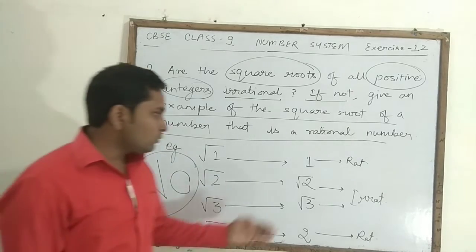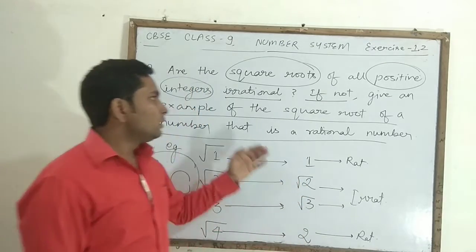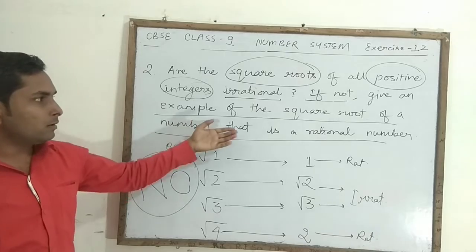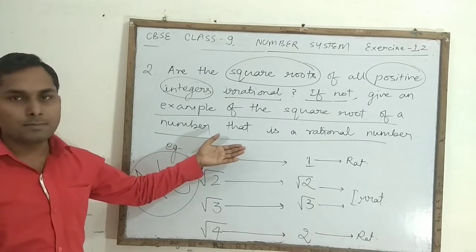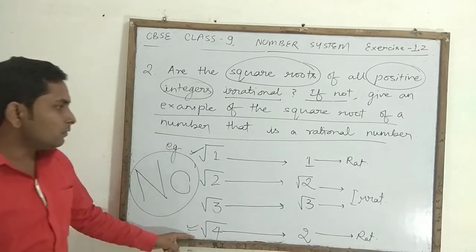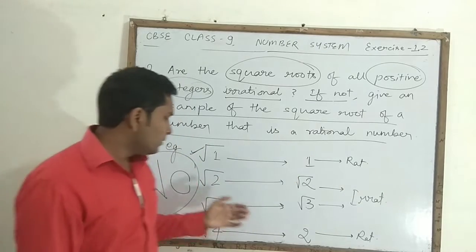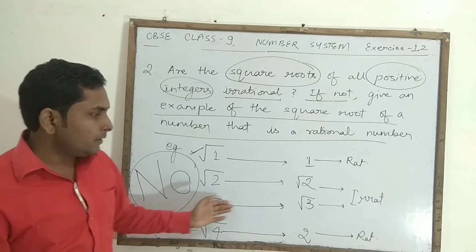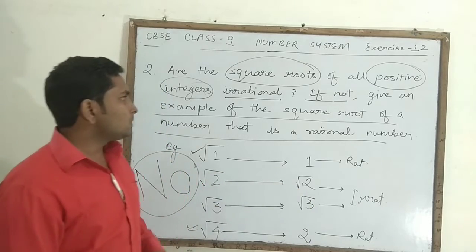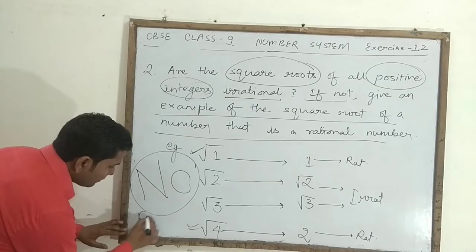So, giving a counterexample: square root of 4 and square root of 1 give you rational numbers, whereas square root of 2 and square root of 3 give you irrational numbers. Therefore, this is a false statement — not all square roots of positive integers are irrational.